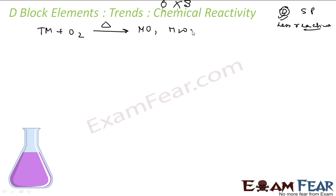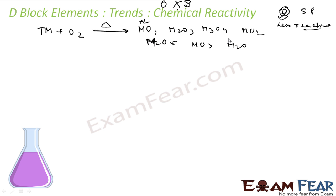Metal oxides come in different varieties: M2O3, MO, M3O4, MO2, M2O5, MO3, M2O — all different types of oxides. All of these demonstrate variable oxidation states. For example, M2O has a +1 oxidation state, MO has +2, M2O3 has +3, MO2 has +4, M2O5 has +5, and MO3 has +6. Now if we talk about the acidic and basic nature of these metal oxides...